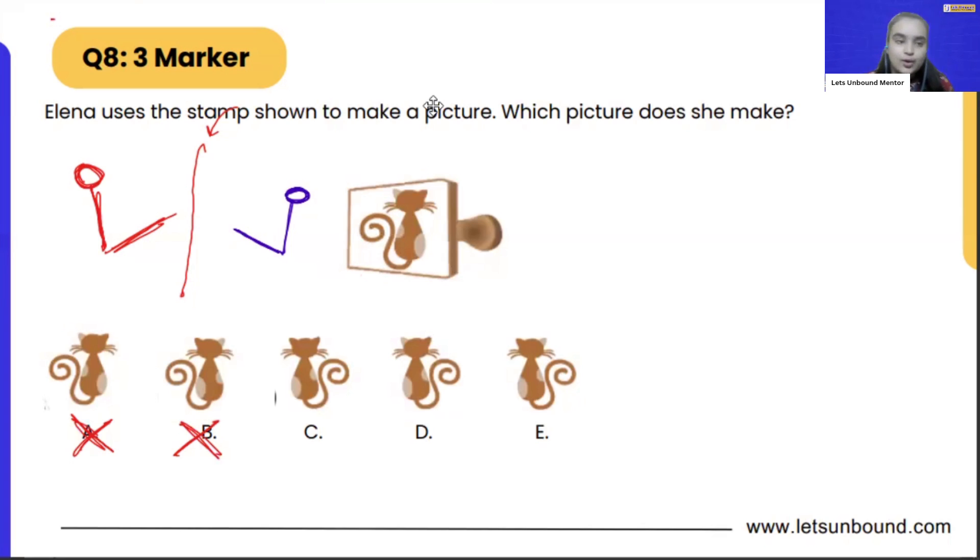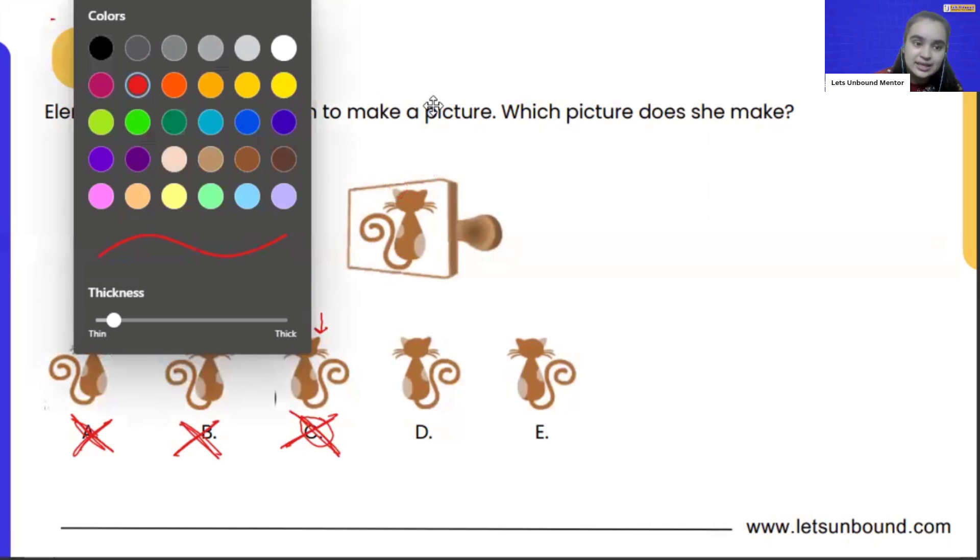Option A looks very much similar to what we have in the question, but we have to find out the reverse of it because it is going to be mirror image. Now we are left with C, D, and E. If I carefully see option C, both the ears are brown in color.